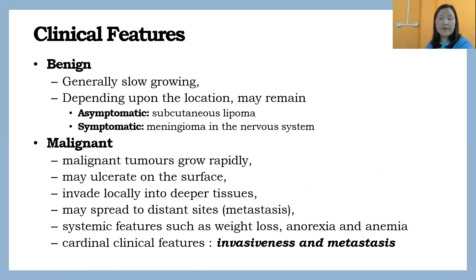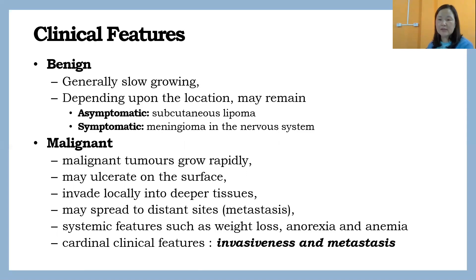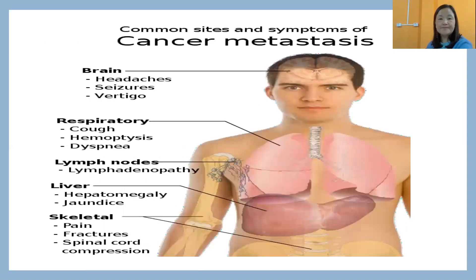Clinical features come under signs and symptoms. Benign tumors usually have mild symptoms and just keep growing. But in case of malignant tumors, as mentioned before, they grow rapidly, they alter the surface, they invade into deeper tissues, and they spread from one place to another. They have two important characteristics — invasiveness and metastasis — which are not present in benign form.